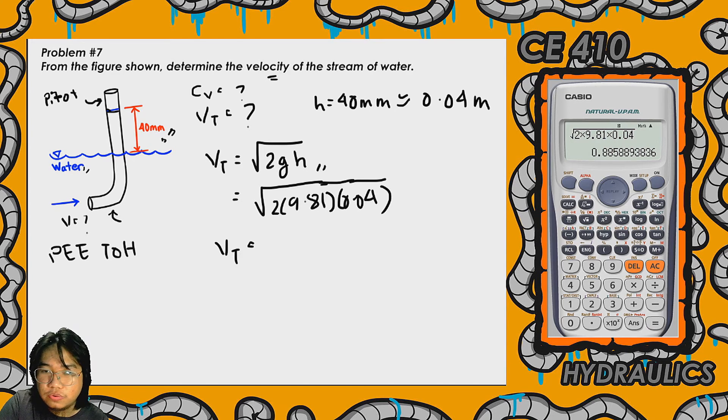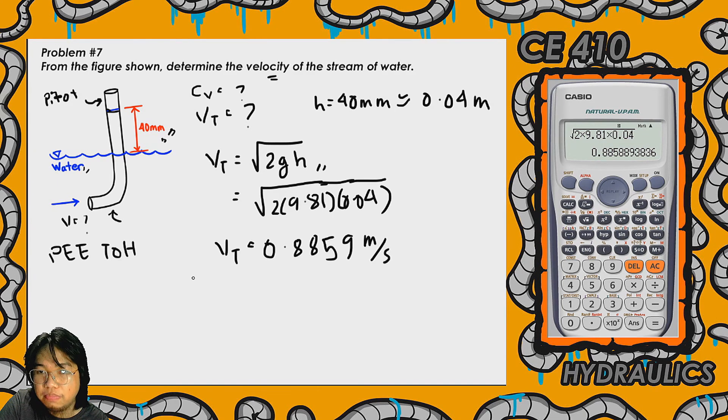The computed velocity is 0.8859 meters per second. So our answer is the theoretical velocity obtained using the pitot tube.